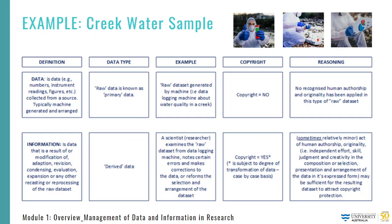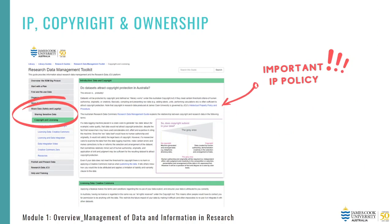However, if a scientist examines the data from the data logger, notes certain errors, and makes corrections to the data, or reforms the selection and arrangement of the dataset, that relatively minor act of human authorship, originality and application of skill and judgment may be sufficient for the resulting dataset to attract copyright protection. So it will often be a question of fact and degree on a case-by-case basis. I encourage you all to make sure you have a very good understanding of IP, copyright and ownership of research data and information.